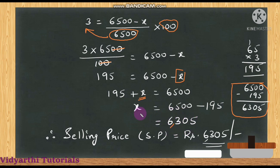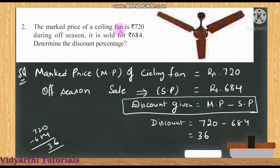Since x represents the selling price, the selling price is ₹6,305. The sewing machine is being sold by the shopkeeper for ₹6,305 rupees.